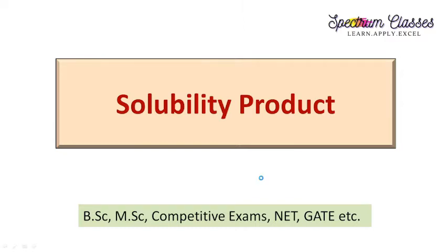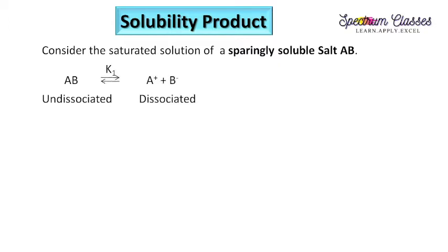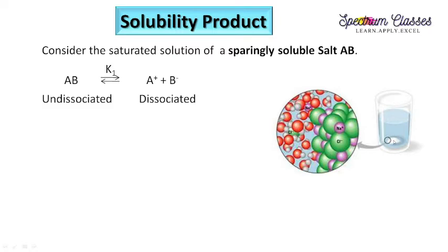So let's start with the solubility product. Solubility product is related to salts which are sparingly soluble. It is very important to understand sparingly soluble salts. Suppose we are having a salt AB. This salt is dissolved in a solvent — some part remains undissolved and some part gets dissolved. So we have an equilibrium between the undissociated salt and dissociated ions, represented by K1, the equilibrium constant. Note: capital K for equilibrium constant, small k for rate constant.